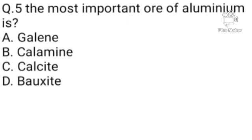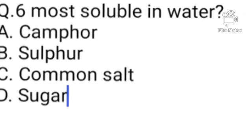Question number 5. The most important ore of aluminium is: Option A: Galena. B: Calamine. C: Calcite. D: Bauxite. Option D is the correct answer. The most important ore of aluminium is Bauxite.